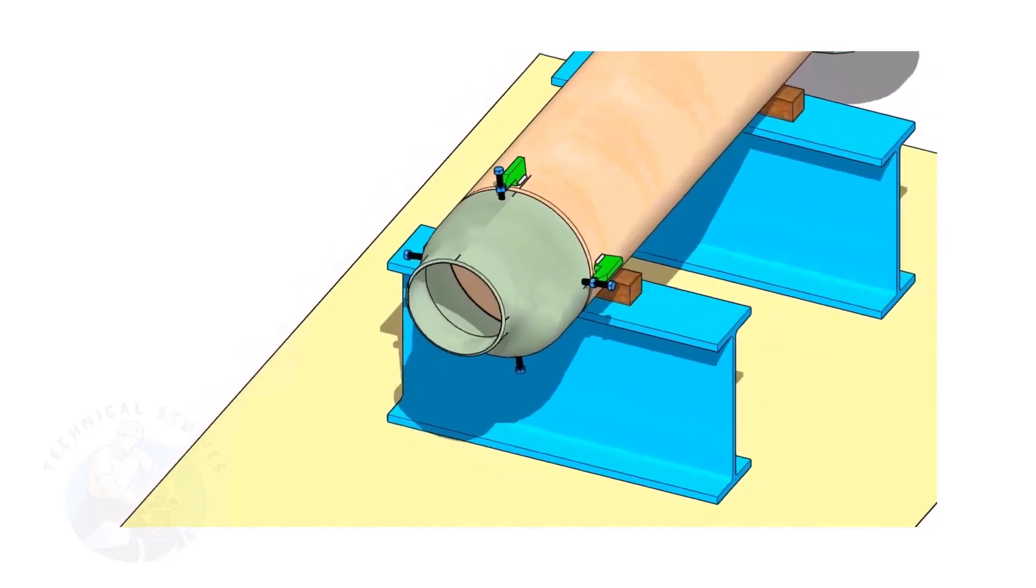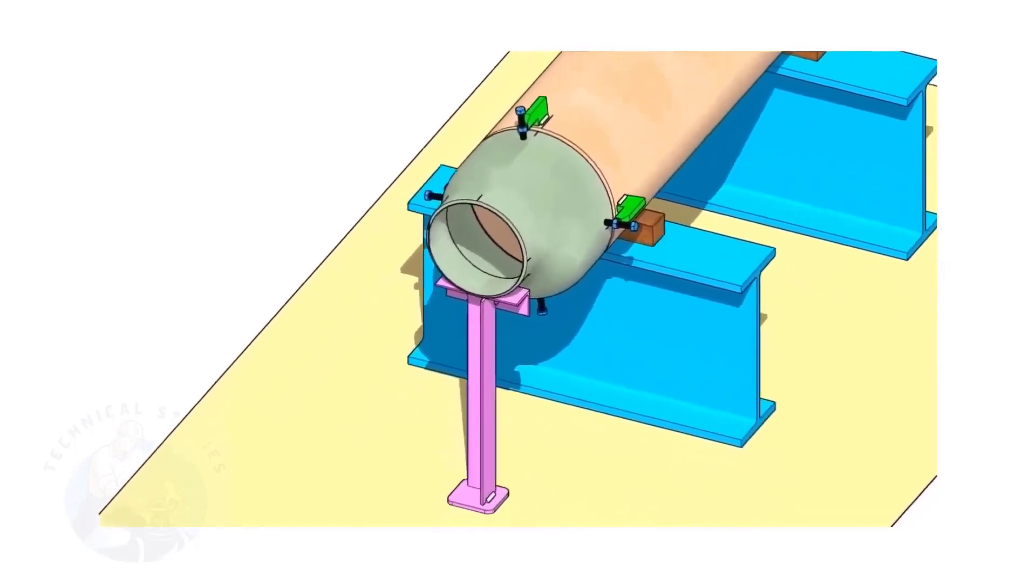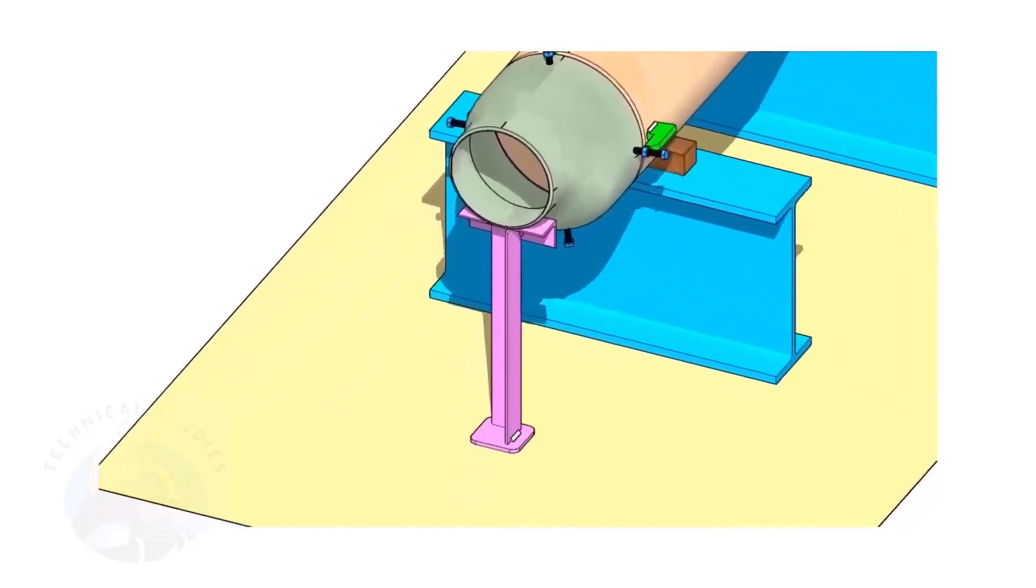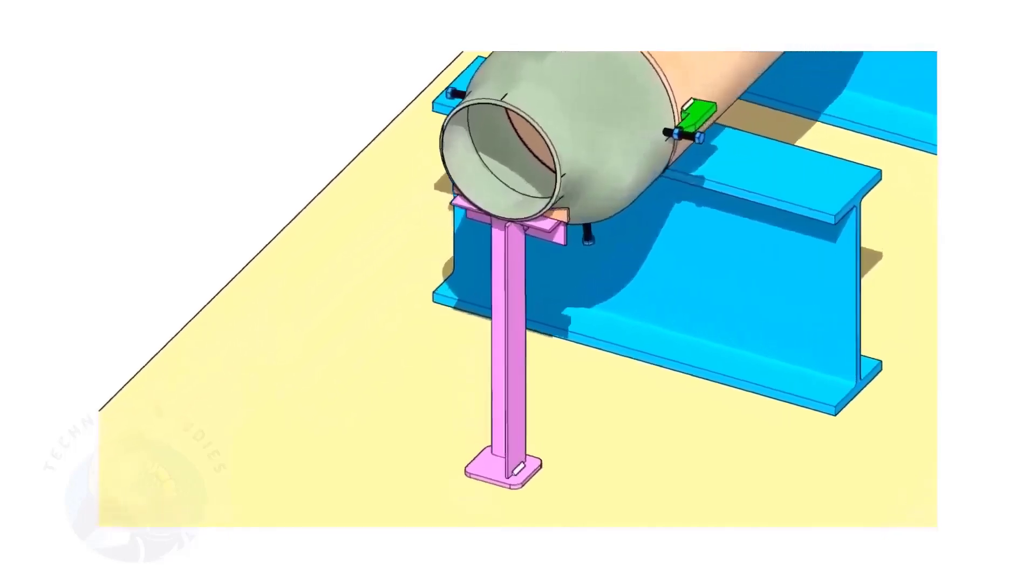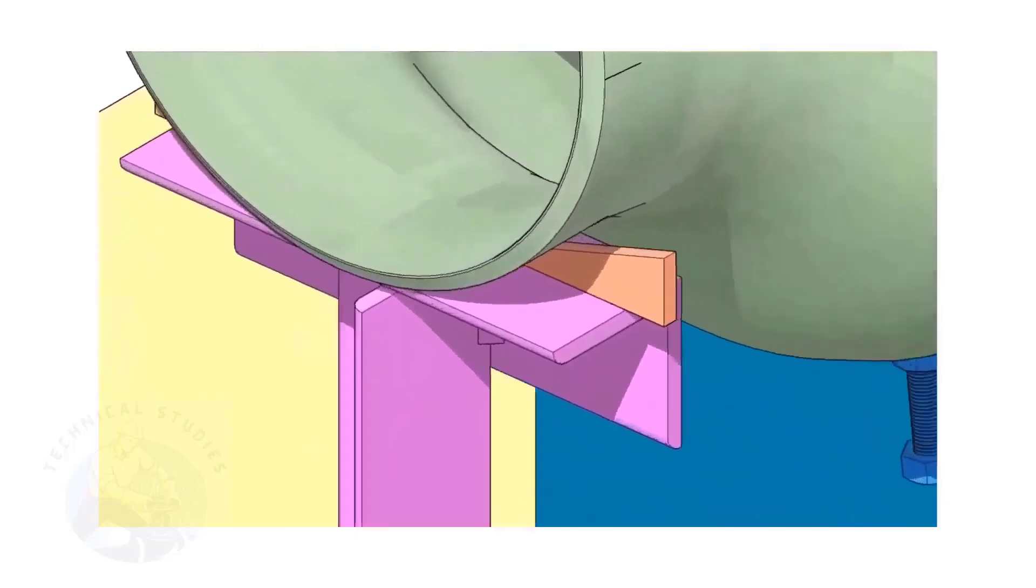Put the reducer in the clamps. Slightly tighten the bolts. Arrange proper supports below the reducer. The height of the support shall be adjustable. Here, I used simple wedges.